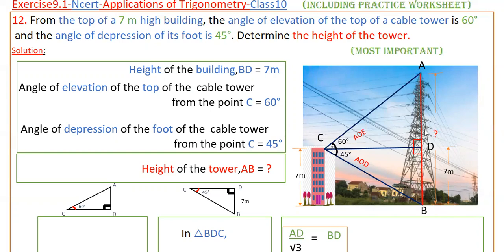AB is equal to AD plus DB. If you draw a horizontal line from C to the tower, that is CD, then BD is equal to the height of the building, that is 7 meters, because CD is a horizontal line. So BD equals 7 meters. There are two right triangles: triangle ADC and triangle BDC.